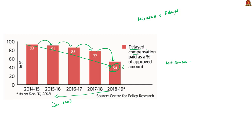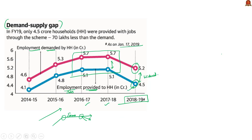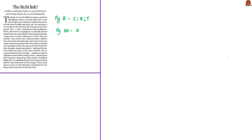You can use any of these statistics in your mains answer related to the MGNREGA scheme, for answers related to delay in payments made by the government, or also for answers concerned with employment. Let us move on to the next news article. This editorial is about the failure of authorities in Bihar with respect to preventing the deaths of children due to encephalopathy.